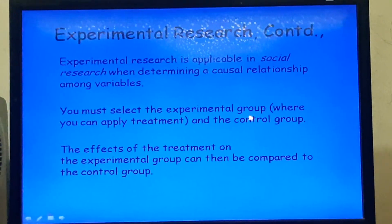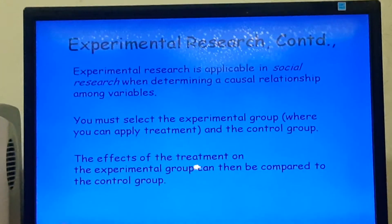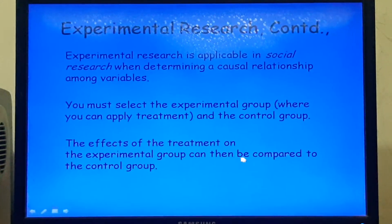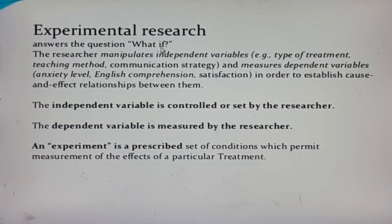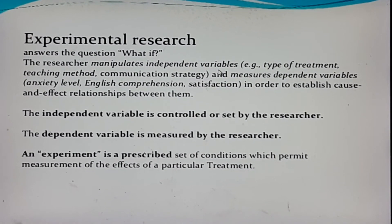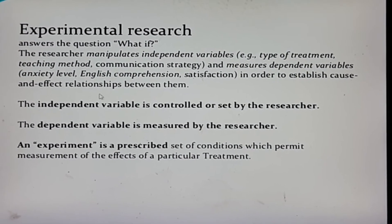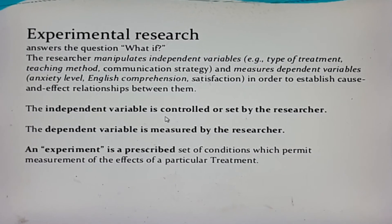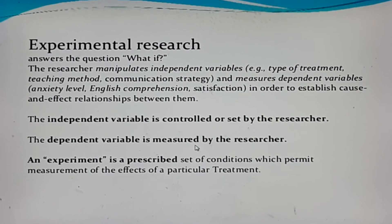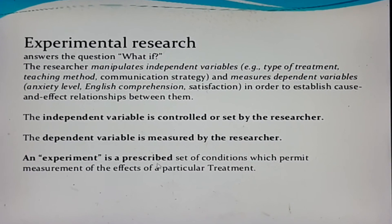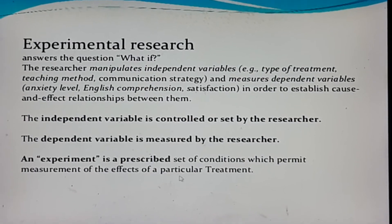You must select the experimental group where you can apply treatment and the control group. The effects of the treatment on the experimental group can then be compared to the control group. Experimental research answers the question: what if? The researcher manipulates independent variables and measures dependent variables in order to establish cause and effect relationships. The independent variable is controlled or set by the researcher, while the dependent variable is measured by the researcher.